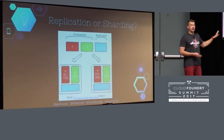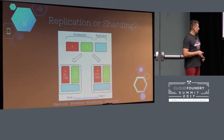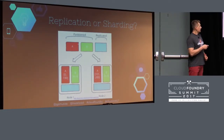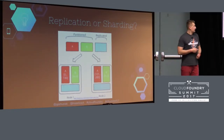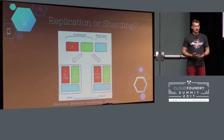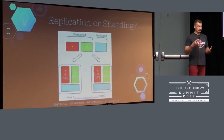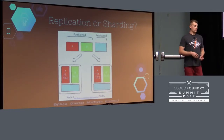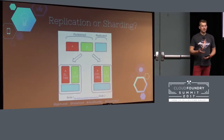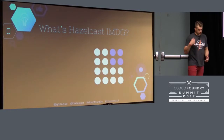Basically we have a replicated data set which contains copies of data on both nodes, and we have a partitioned or sharded data set where the whole data set is sharded across multiple nodes. In practice, these two patterns are usually combined. The typical approach uses consistent hashing — based on the key, it finds where the value will be stored, and for fault tolerance the data is also replicated to another node.